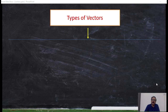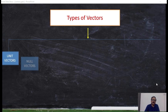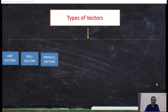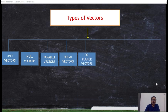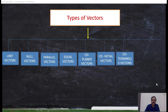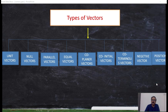Let us now become familiar with the types of vectors. The types include: unit vectors, null vectors, parallel vectors, equal vectors, co-planar vectors, co-initial vectors, co-terminous vectors, negative vectors, and position vectors. These are all different types of vectors.